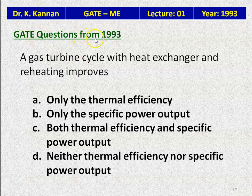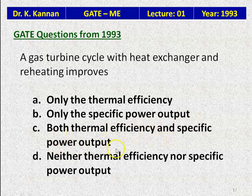Now questions from the 1993 GATE question paper. Question 16: The gas turbine cycle with a heat exchanger and reheating — A: improves only thermal efficiency; B: improves only specific power output; C: improves both thermal efficiency and specific power output; D: improves neither. Option D is immediately rejected. With regeneration (heat exchanger) and reheating, both thermal efficiency and specific power output increase. The answer is C — both thermal efficiency and specific power output improve.